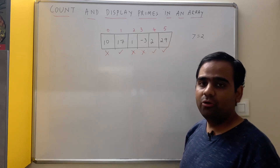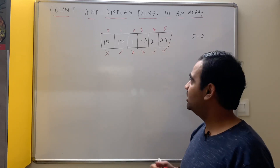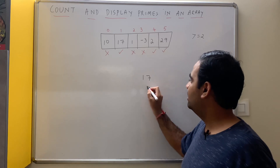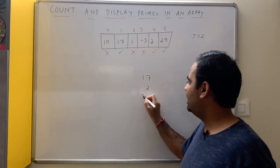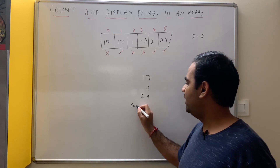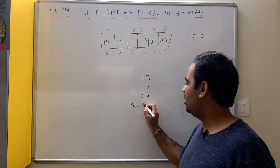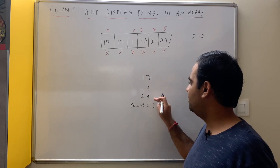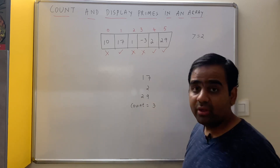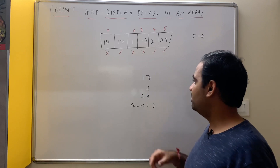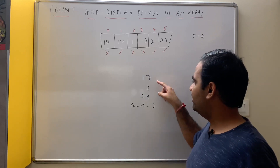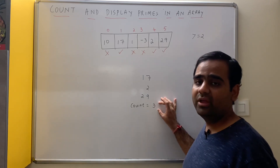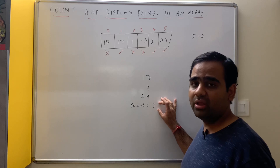What should be the output for this question? The output should be 17, 2 and 29, and you should say the count of prime numbers is 3. There are 3 prime numbers in this array: 17, 2 and 29. Therefore we say count is equal to 3.